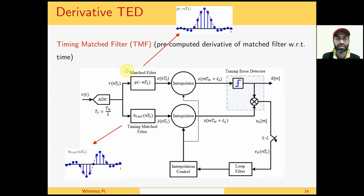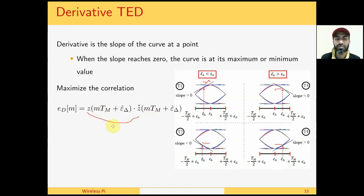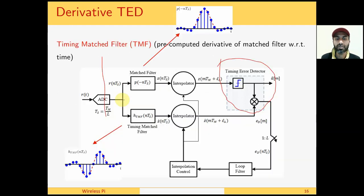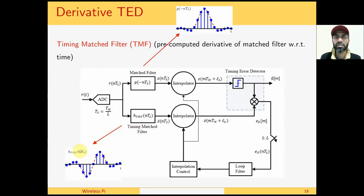This is a block diagram for the derivative TED. We have an analog-to-digital converter taking L samples per symbol, a matched filter (a root raised cosine pulse shape, for example), and a timing matched filter which is the derivative of this pulse shape — just as we did in the carrier frequency synchronization case, we have pre-computed the derivative. After matched filtering and timing matched filtering we have interpolation. The timing error detector uses a decision-directed approach by taking the sign to make it decision-directed.